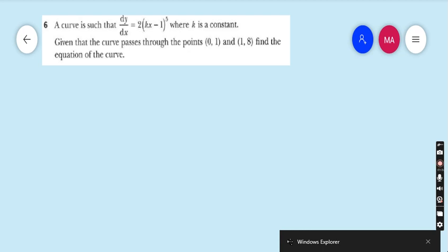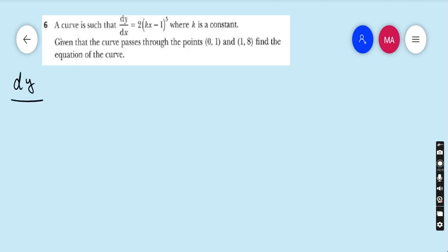This is question number six. A curve is such that dy/dx equals 2(kx - 1) to the power 5, where k is a constant. Given that the curve passes through the point (0,1) and (1,8), find the equation of the curve.